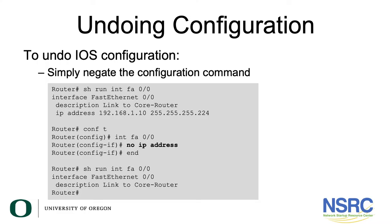How do you undo configuration on a Cisco device? To undo IOS configuration, you simply negate the configuration command. As shown on the screen, you have an interface FastEthernet 0/0 with a description 'link to core router' and an IP address of 192.168.1.10 with a subnet mask of 255.255.255.224.